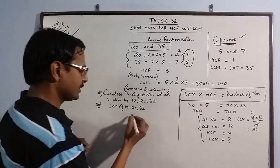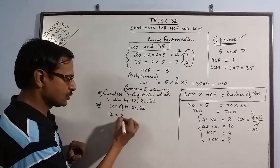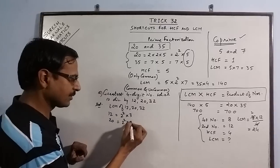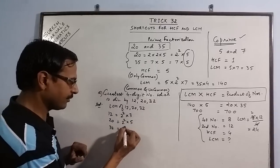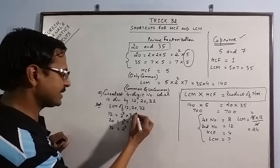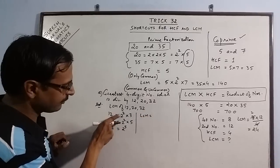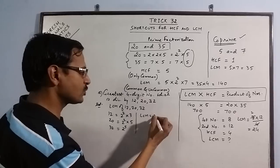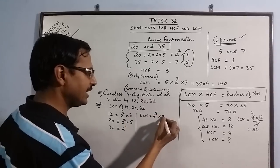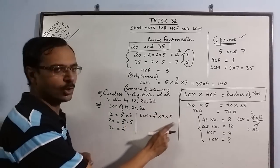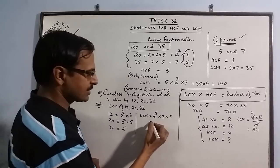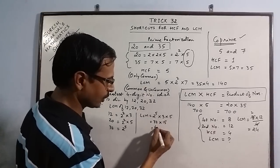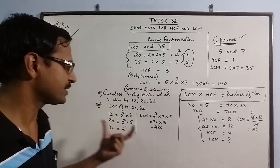I will just solve it for you. So 12 is 2 square into 3, 20 is 2 square into 5 and 32 is 2 raised to power 5. So the LCM is, we have the common factor 2, the highest power of 2 is 2 raised to power 5, then we have 3 and 5. The common factors and the uncommon factors all I have taken. So this is 32 into 15 which comes out to be 480. So the LCM of these 3 numbers is 480.